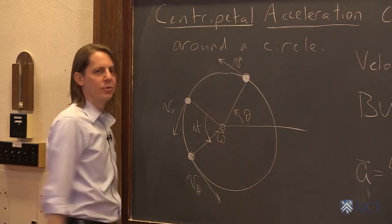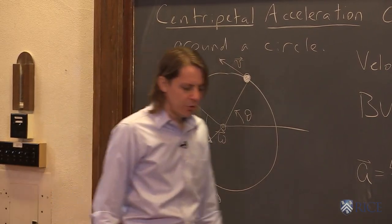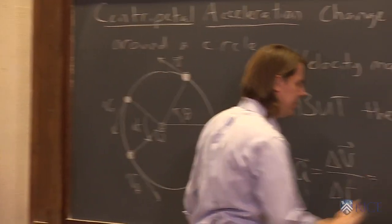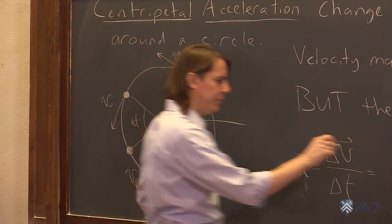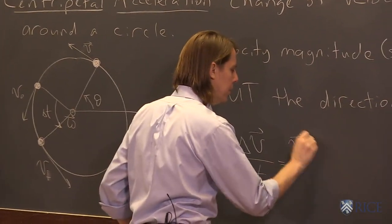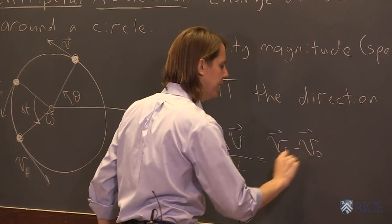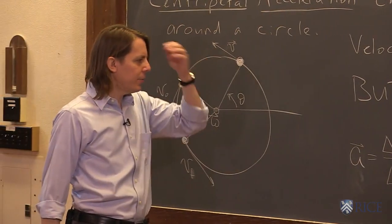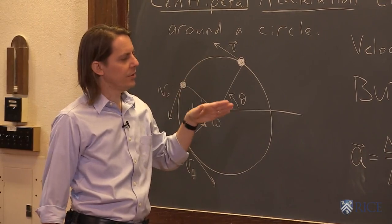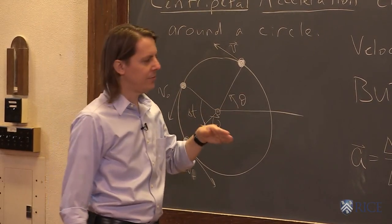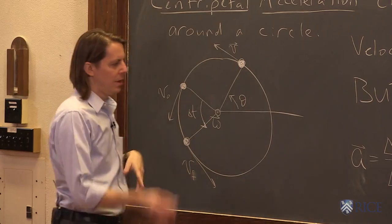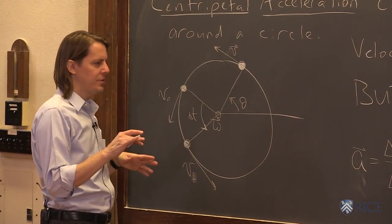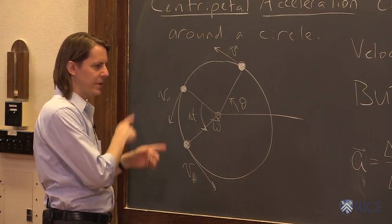So what we would say then is the delta v would just be v-final vector minus v-initial vector over delta t. Well, rather than writing another equation, let's just draw the vectors and see what v-final minus v-initial looks like. So if we're going to subtract two vectors, you just add them head to tail, but you flip the second one.